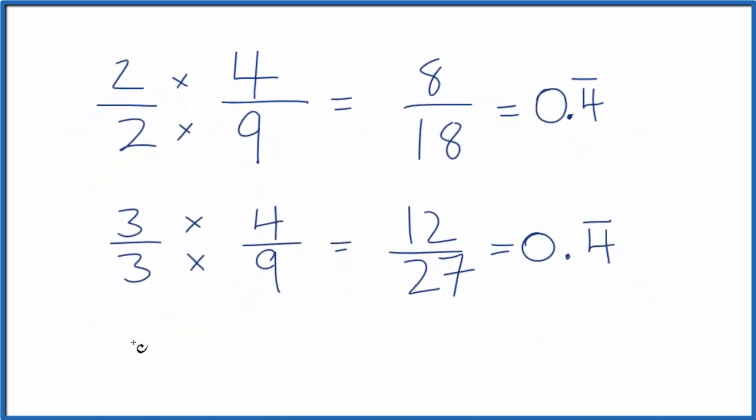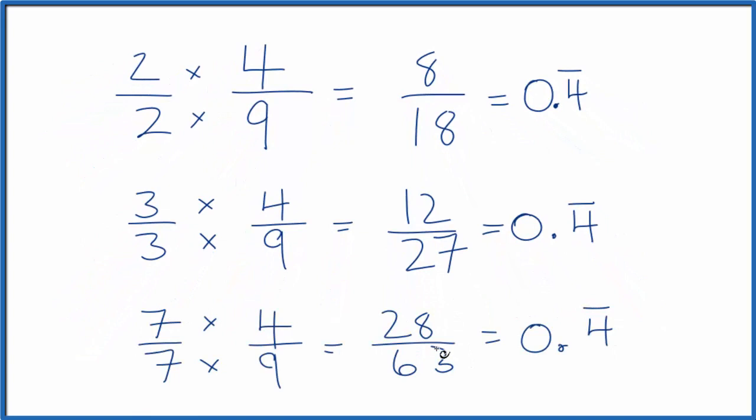One last one. How about 7 over 7? So 28 over 63, that's an equivalent fraction to 4 ninths, or 8 eighteenths, or 12 27ths.